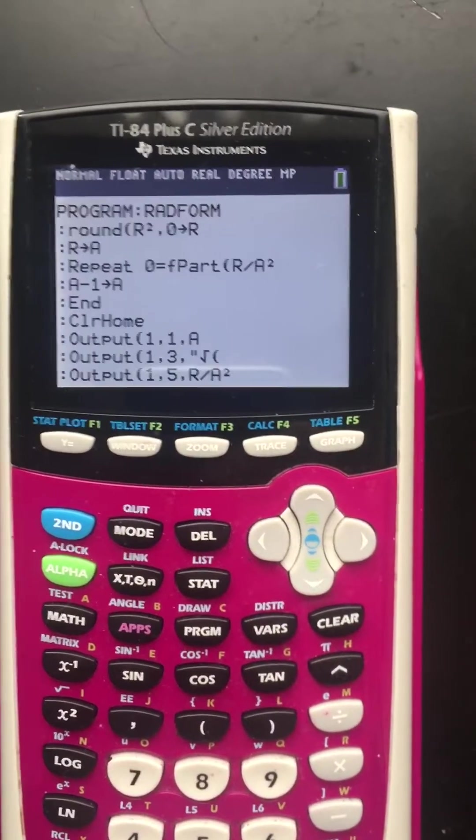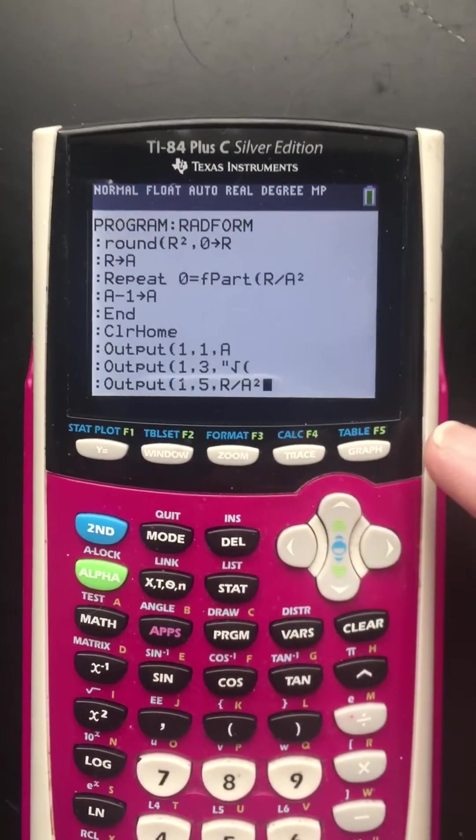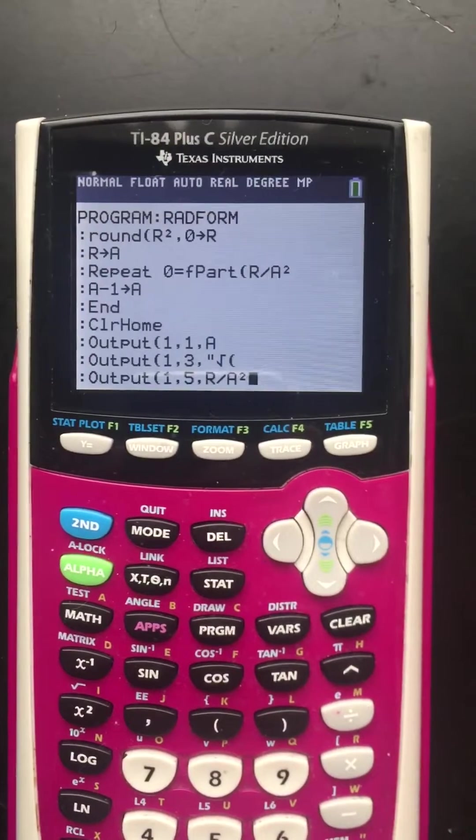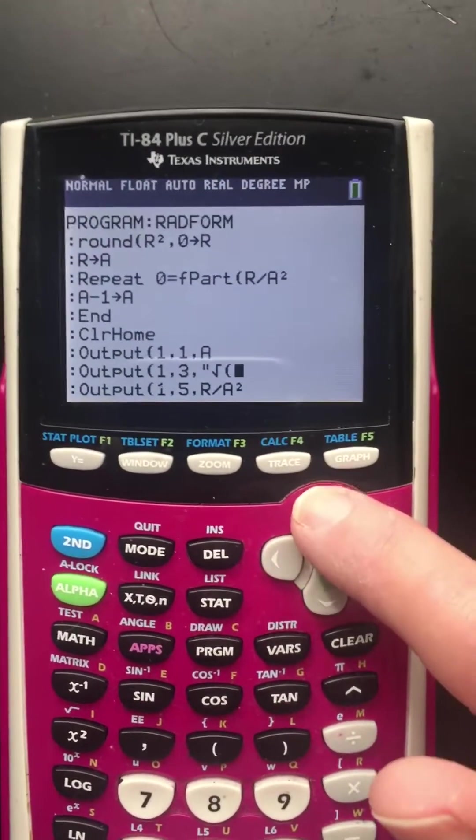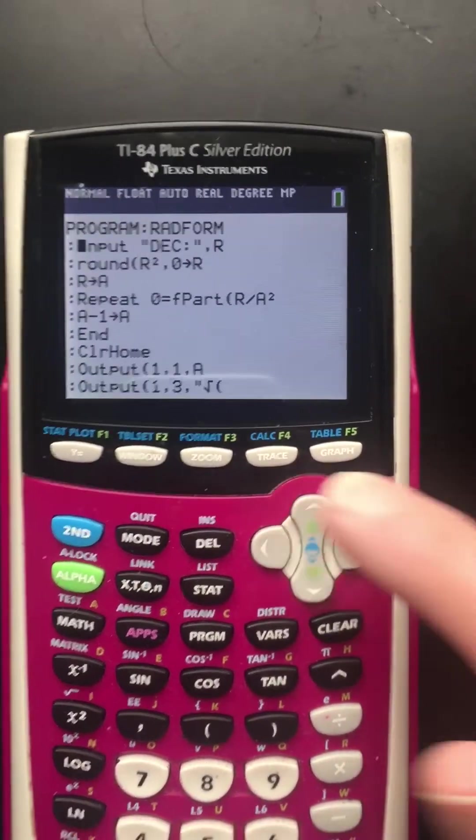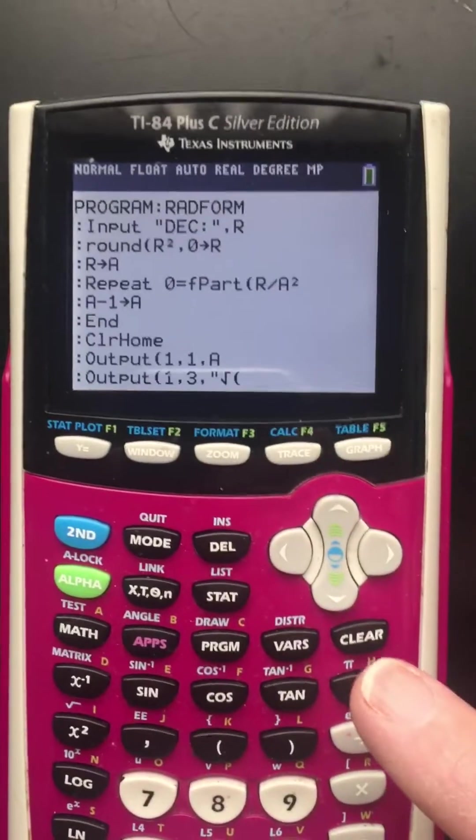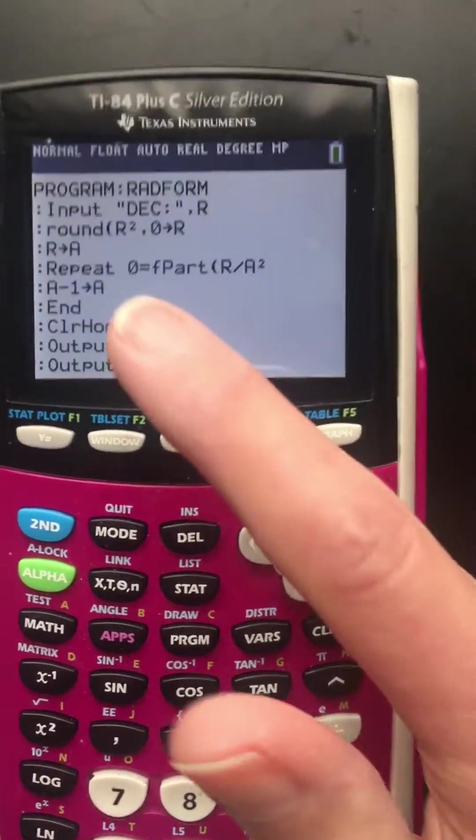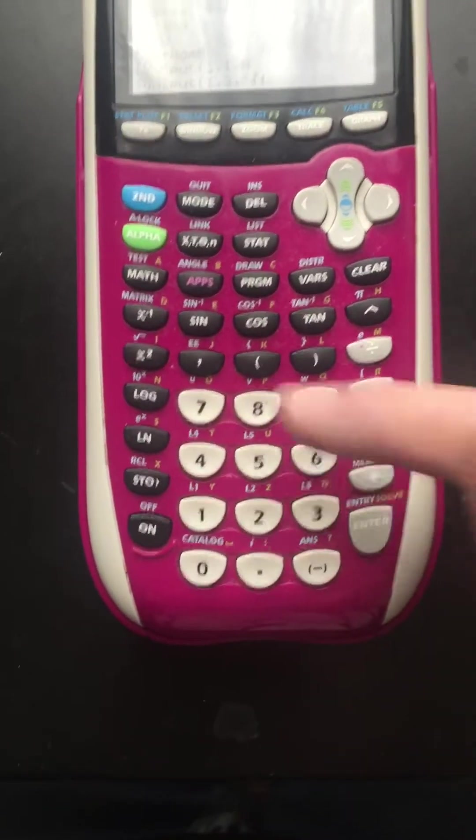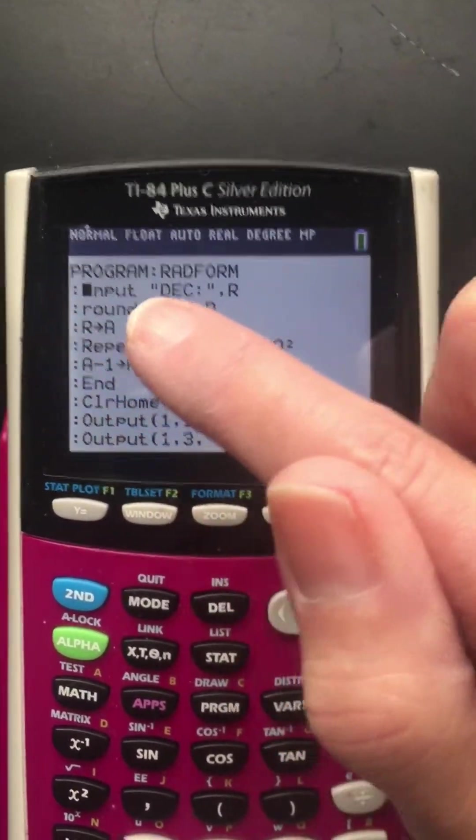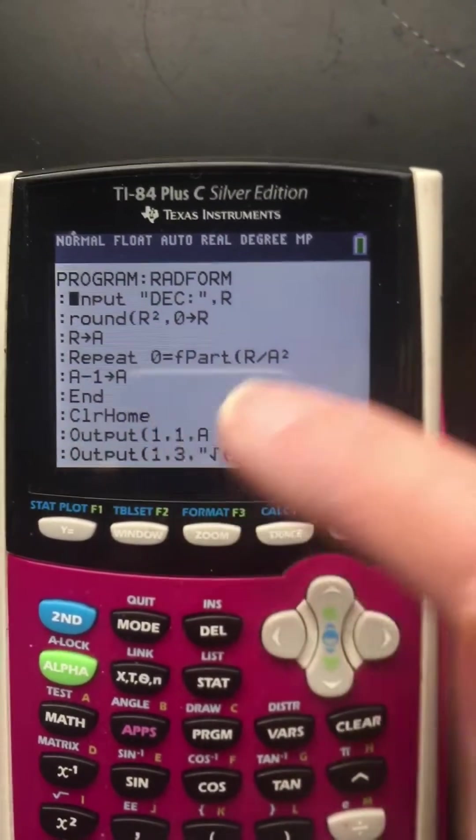So just pause the video, type it in exactly. If you don't know how to type something in, you can look that up on the internet. It tells you where you get, like say the word input. You can find that word to type it in. One place you can find it is under the catalog. But there are other places, there's shortcut menus and stuff like that. But you don't type I-N-P-U-T. You don't use the alpha keys. When it has a capital letter and then the rest of it, then you find that command word.